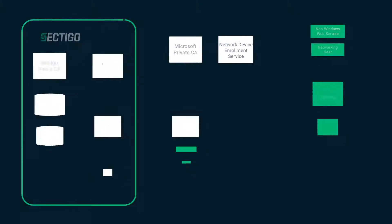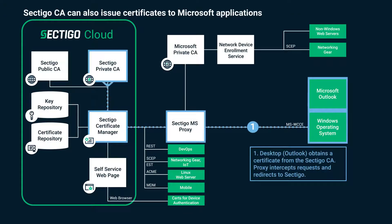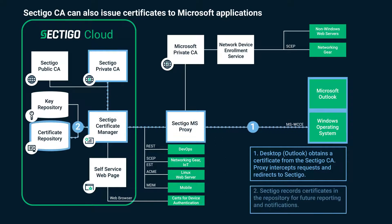The request for a certificate from a Windows application can optionally be delegated to the Sectigo-issuing CA. It is automatically installed using the same auto-enrollment capability that Microsoft CA utilizes. This would be for cases where Microsoft CA cannot issue the certificate, such as publicly trusted certificates, or where the customer can save money by eliminating Microsoft CA.